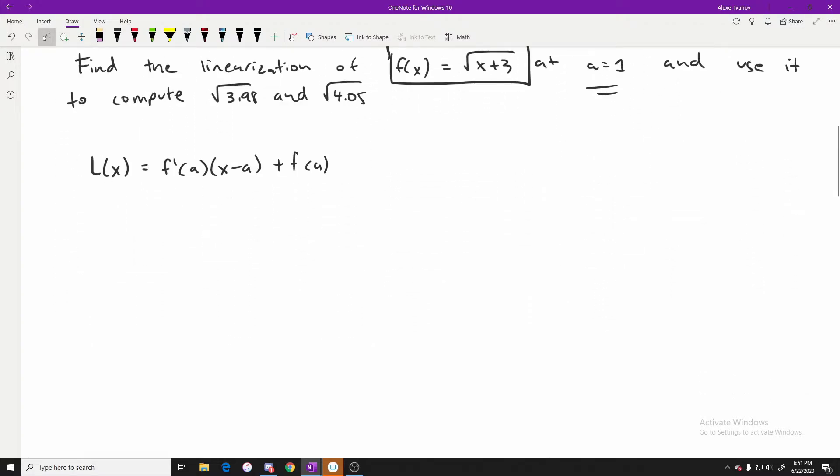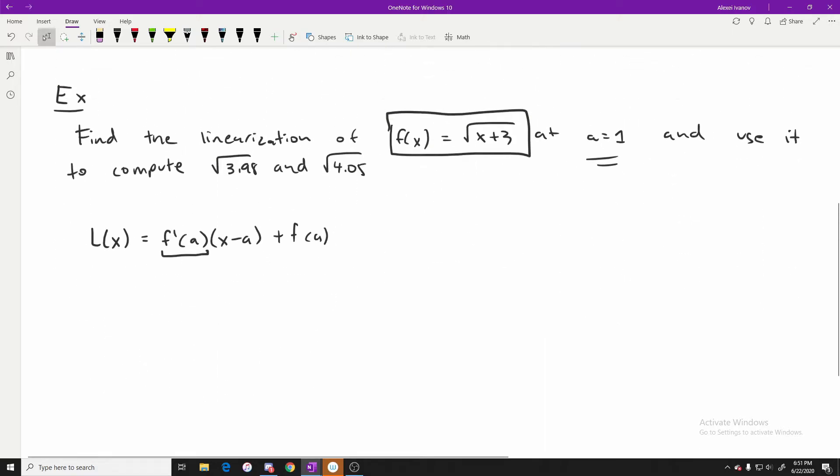So we can do this by applying the linearization formula. So here's the formula and let's start computing these values. So we have f'(a) and we have the function right here. So we can compute f'(a) by simply finding the derivative and plugging in a equals one. So the derivative of this function would be 1/2(x + 3) times negative one half. And now f'(1) since a equals one right here would be 1/2 times (1 + 3) to the power of negative one half.